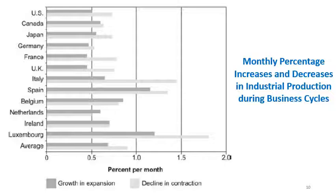In this graph we can see the monthly percentage increase and decrease in industrial production during the business cycle. We can see growth during expansion and decline during contraction. Luxembourg has the highest decline in contraction, while the lowest decline is Germany. The highest growth during expansion is in Luxembourg and Spain, while the minimum is for France, the UK, and also Germany.